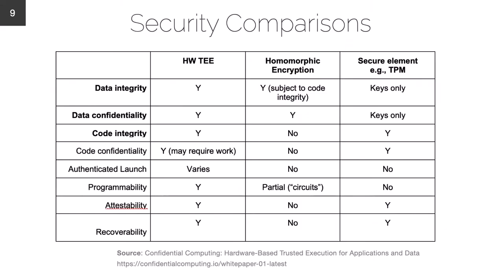This table compares several security features found in various security hardware elements. The TEE highlights data integrity, data confidentiality, and code integrity as integral requirements. However, code confidentiality, authenticated launch, programmability, attestability, and recoverability are all optional items — a hardware element may or may not provide them and still be considered a TEE.